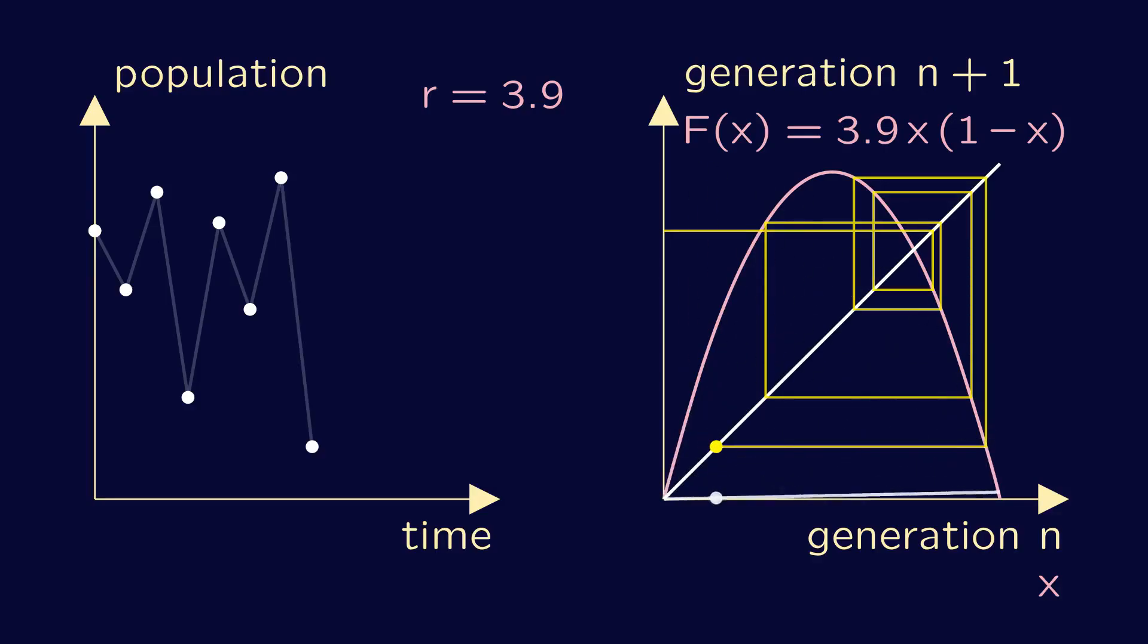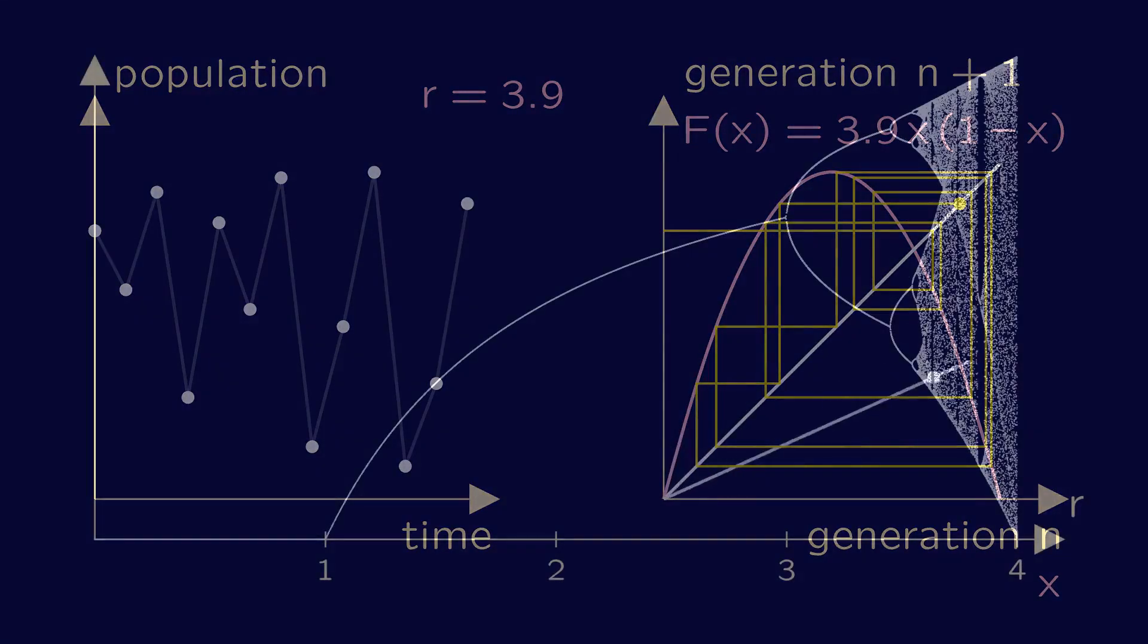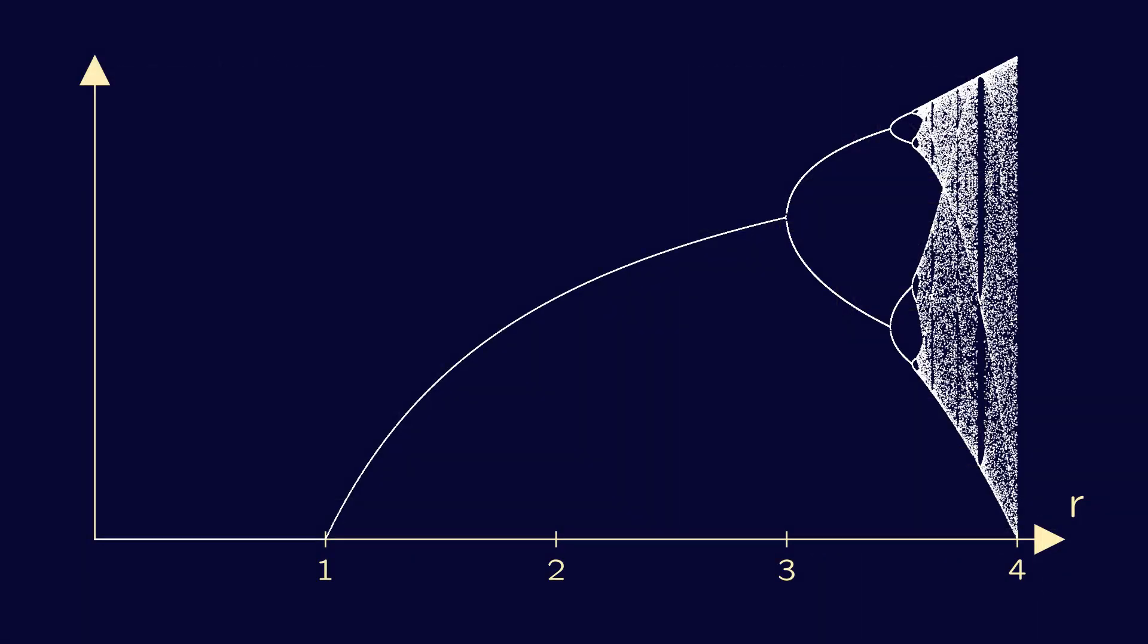The transition from periodically oscillating solutions to chaos, as the parameter r increases, is full of magic. It's often visualized by a bifurcation diagram, like this one.